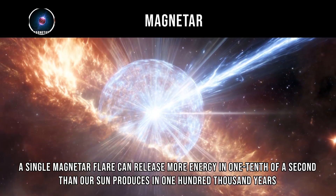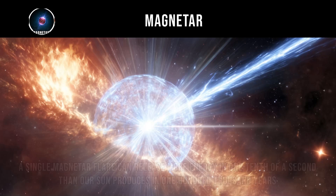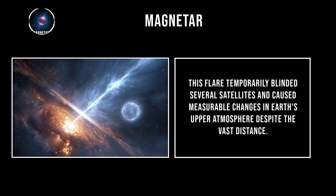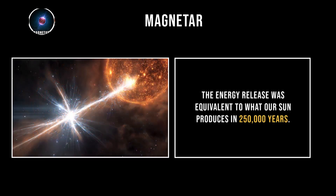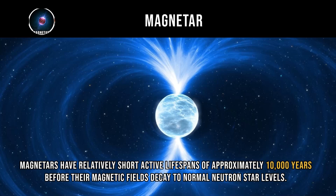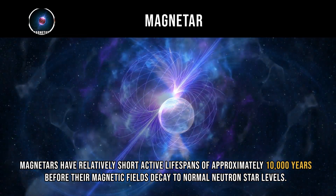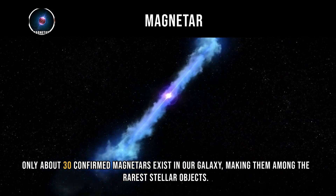A single magnetar flare can release more energy in one-tenth of a second than our sun produces in 100,000 years. The most powerful magnetar flare ever recorded occurred in 2004 from SGR 1806-20, located 50,000 light-years from Earth. This flare temporarily blinded several satellites and caused measurable changes in Earth's upper atmosphere, despite the vast distance — equivalent to what our sun produces in 250,000 years. Magnetars have relatively short active lifespans of approximately 10,000 years, and only about 30 confirmed magnetars exist in our galaxy, making them among the rarest stellar objects.